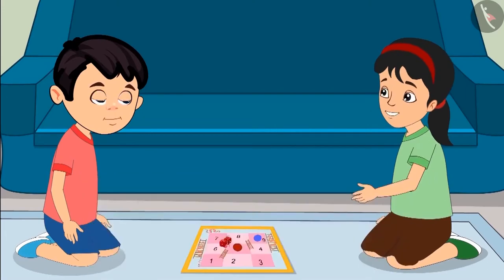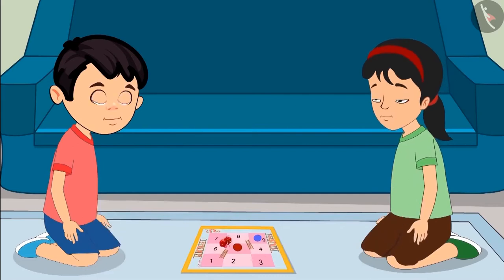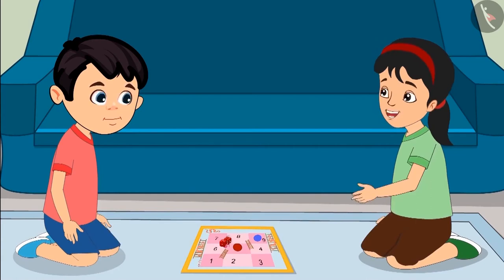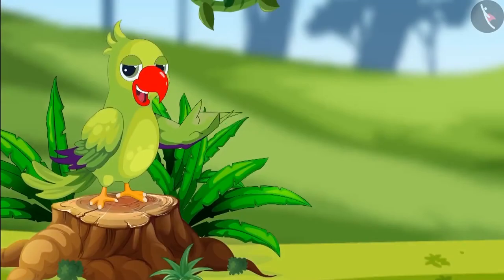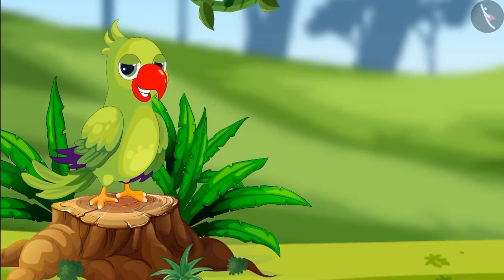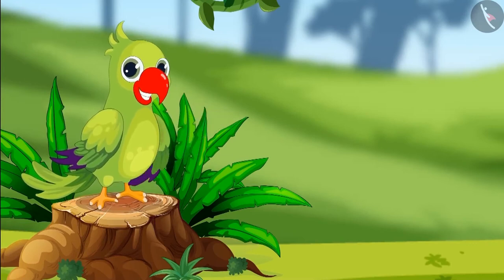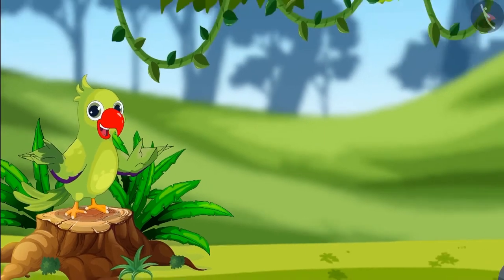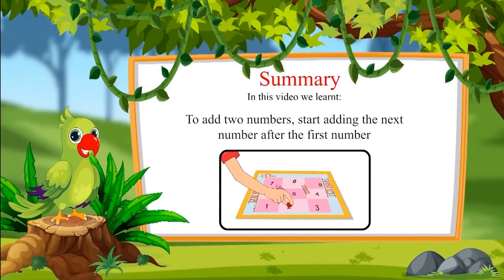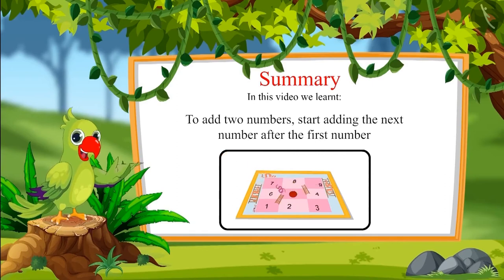Is that right, Pinky? Yes Chotu, you are absolutely correct. Hooray, I won the game! Come on, let's start again — this time properly add the numbers on both dice and move your piece forward. So children, I hope you had fun watching the game of snakes and ladders. You too can now add two numbers like Chotu and Pinky. In this video we learned that to add any two numbers, we need to start adding the next number after the first number. Goodbye friends!